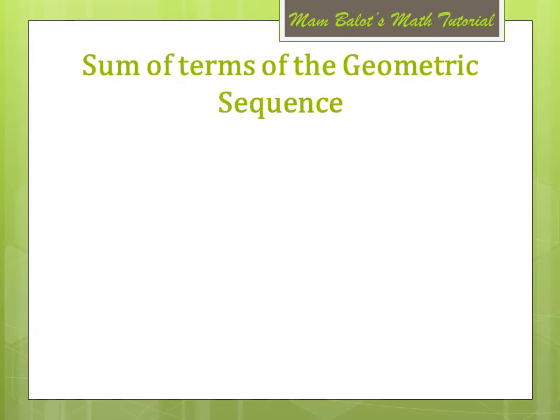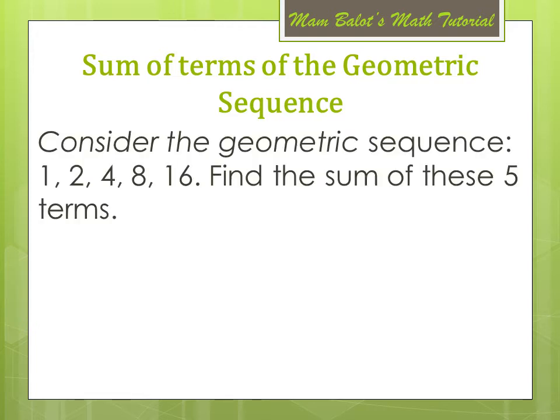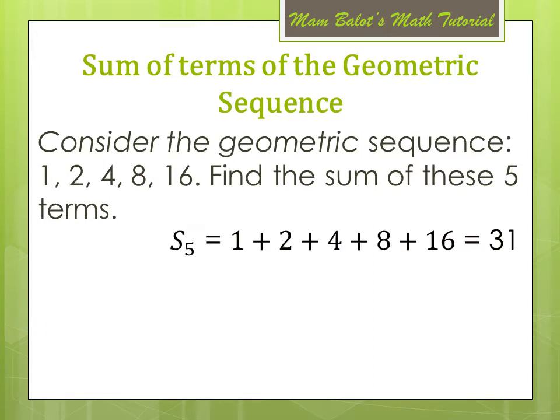Now let us derive the formula for the sum of terms of the geometric sequence. Let us consider the sequence 1, 2, 4, 8, and 16. Find the sum of these 5 terms. To get the sum, we simply add the 5 terms, and of course we get 31.